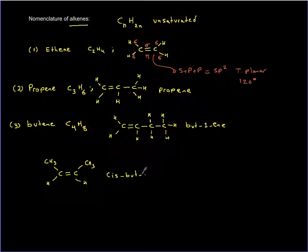Another possible isomer has one methyl group on top and one methyl group on the bottom. This is known as trans, like transatlantic, meaning across from each other. This is trans but-2-ene.